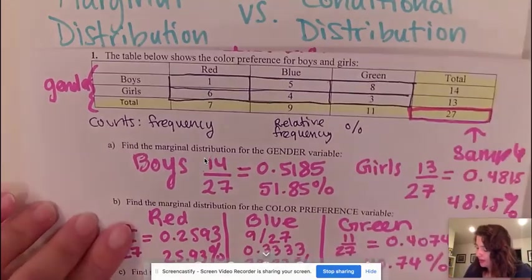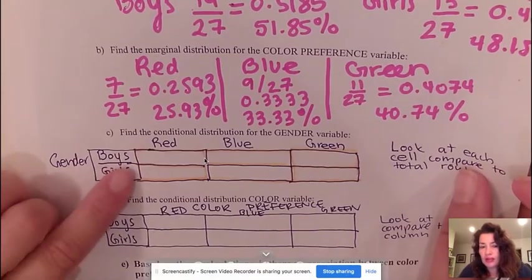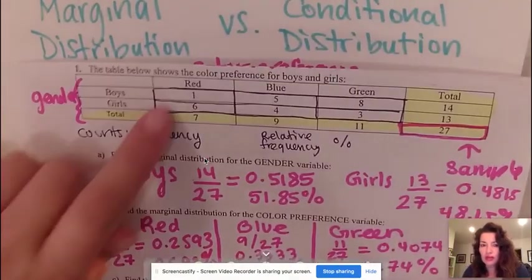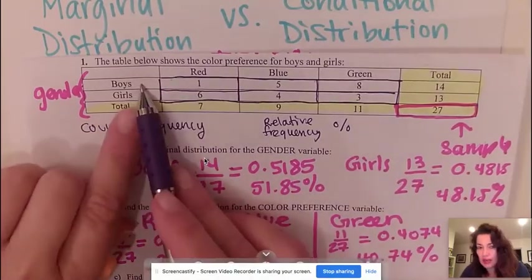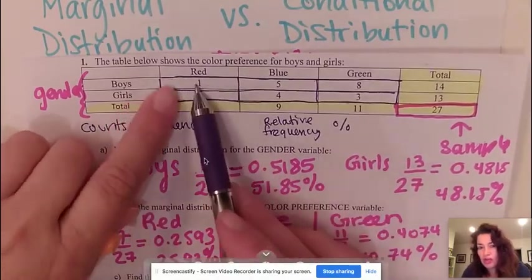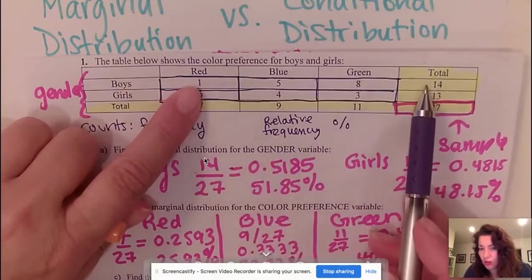All right, so let's go ahead and take a look how we would find conditional distribution for gender. When I look at the cells, the first thing I'm going to look at is my rows. So I could first look at the boys and I'm going to look across.